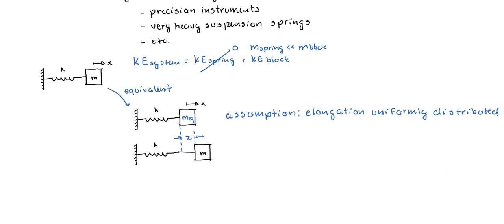The kinetic energy of the system is equal to one-half times the equivalent mass times the velocity squared of that mass. But we have a problem, and the problem is that there's no single value that we can give for the velocity, because it's not constant throughout the system.